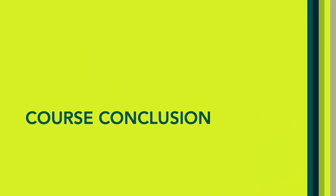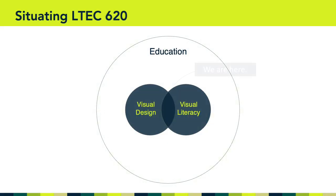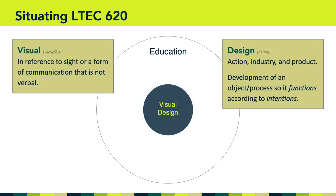Finally, I want to take a few minutes to recap what we've covered this semester and celebrate all that you've accomplished in six short weeks. We started out situating ourselves at the intersection of visual design and visual literacy. On the design side, we learned that the word 'design' is complex — it can refer to an action, an industry, or a product. We also emphasized that when we design something, design is an action, and it's important to do that action with intention, be clear about the messages and emotions we're trying to communicate, and understand how design decisions influence a design's ability to convey information.